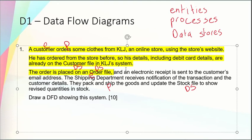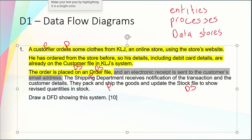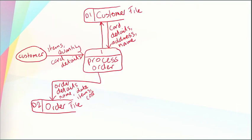An electronic receipt is sent to the customer's email address, so something is going back to the customer now. From the order process, we draw an arrow back to the customer entity and label it with 'receipt'. So a receipt is being sent back to the customer.